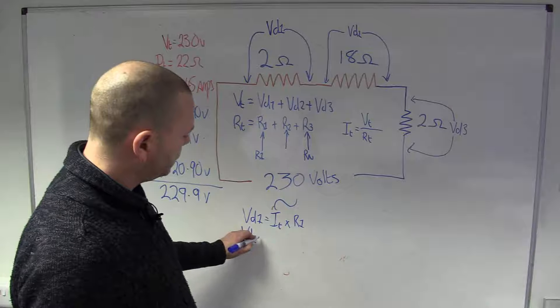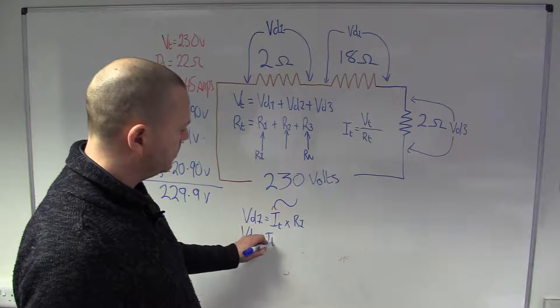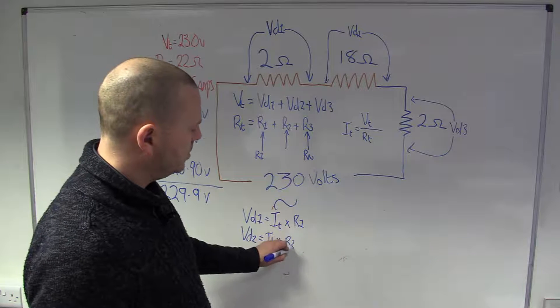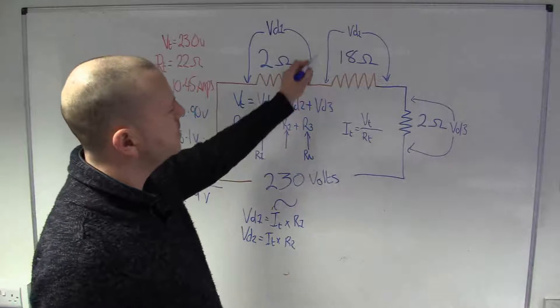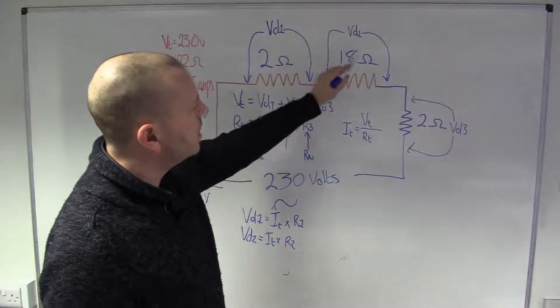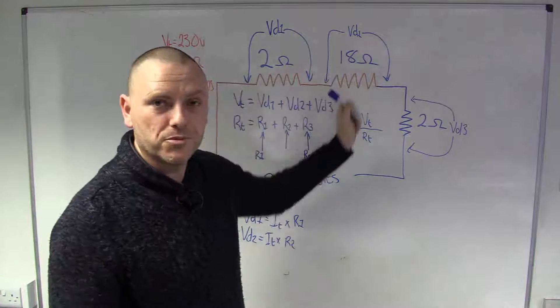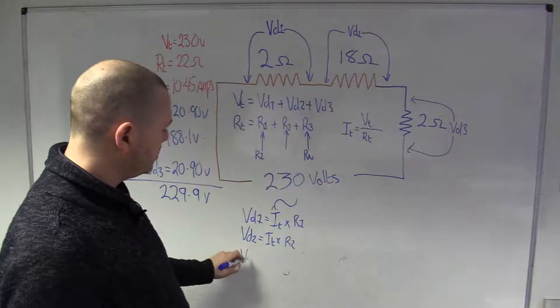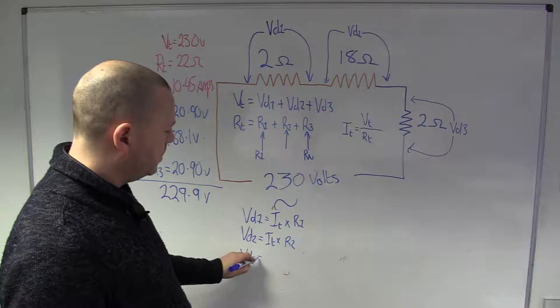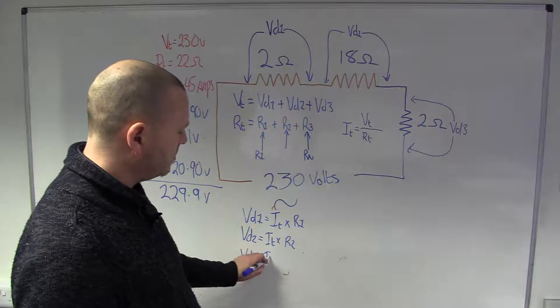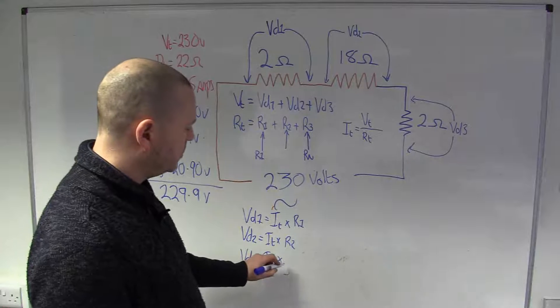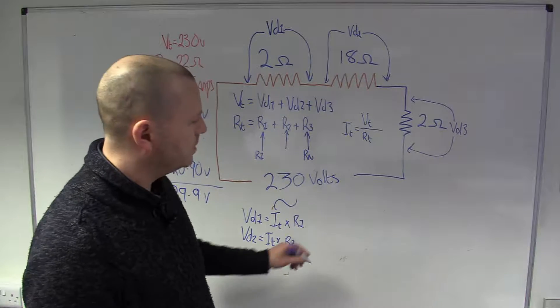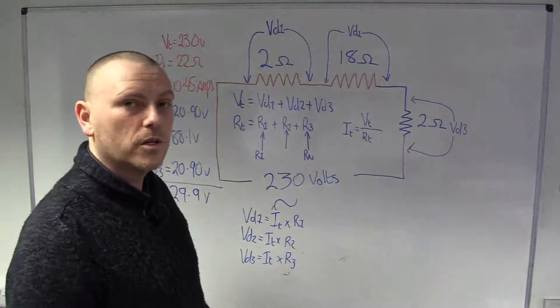Volt drop 2, total current times resistor 2 again because we've zoomed into that area so we're interested in the voltage across it that resistance and the current going through it. Then volt drop 3 was the same pattern so total current the current going through it times by the resistor that we're interested in, in that case it was the 2 Ohm one there.